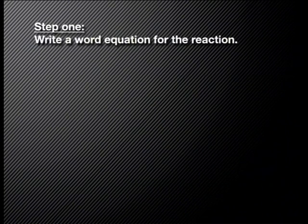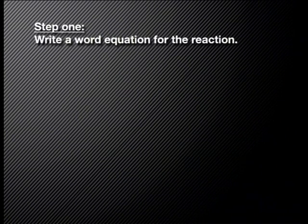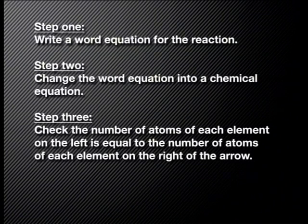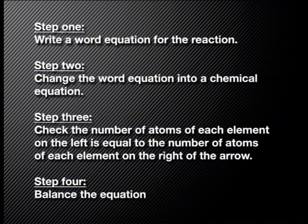Now, there's one more thing we need to do after observing a chemical reaction. We need to represent the reaction in a scientific way. We do this by writing a balanced chemical equation. Can you still remember the steps we take to write balanced chemical equations? Let's recap them. Step 1: Write a word equation for the reaction — reactants are placed on the left, products on the right, and in the middle, the arrow. Step 2: Change the word equation into a chemical equation, using the symbols of the element to write the correct chemical formula. Step 3: Check that the number of atoms of each element on the left of the arrow is equal to the number of atoms of each element on the right. Step 4: Balance the equation by writing numbers in front of the formula.